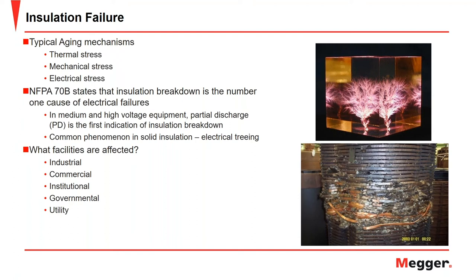Partial discharge, or PD activity, is one of the first indications of deteriorating insulation in medium and high voltage equipment. This is commonly seen in solid insulation with the phenomenon of electrical treeing — a damaging process due to partial discharges that progresses through stressed dielectric insulation. If it were to bridge completely through both sides, you could see a catastrophic event such as a blown-out winding. This affects everyone: industrial, commercial, institutional, governmental, and utility sectors.